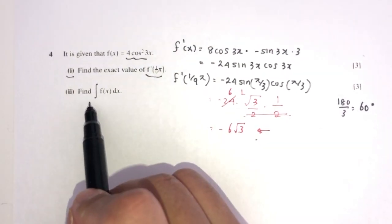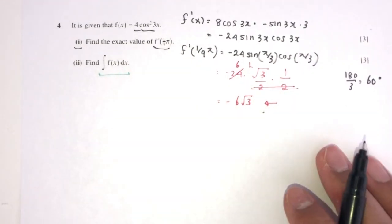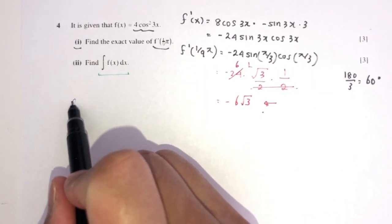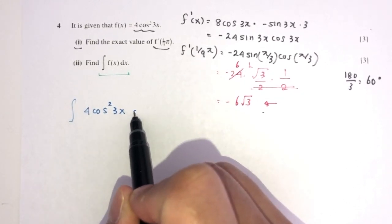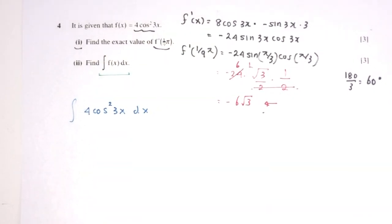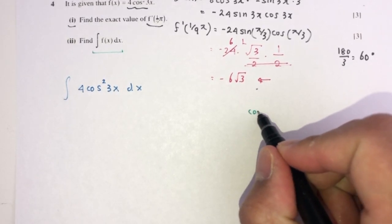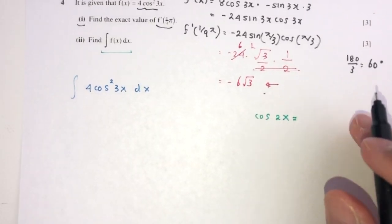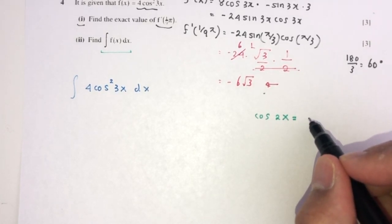For part 2, we need to integrate 4cos²(3x) dx. Whenever we have a squared trig function, we use the cos double angle formula. We know cos(2x) = 2cos²(x) − 1, which rearranges to 2cos²(x) = 1 + cos(2x).